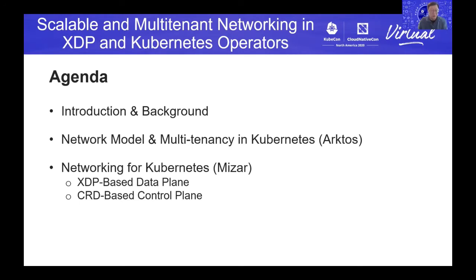This is the agenda for today's talk. I will give an introduction and some background on the project — why we're doing this and what's the context. I will also talk about the current network model in Kubernetes and introduce you to the high-level design of our new multi-tenant model for Kubernetes. We have a forked version of Kubernetes called Arctos. You can consider Arctos as a multi-tenant Kubernetes, and I will introduce it more in the next slides.